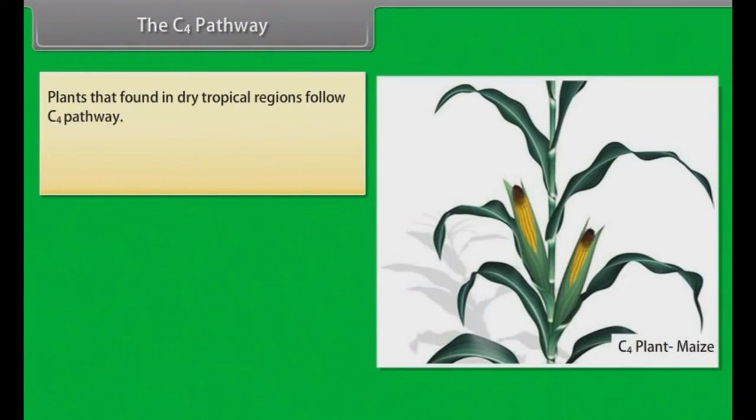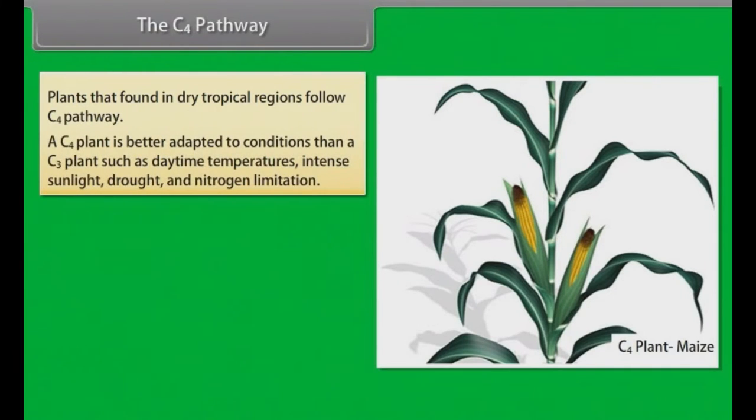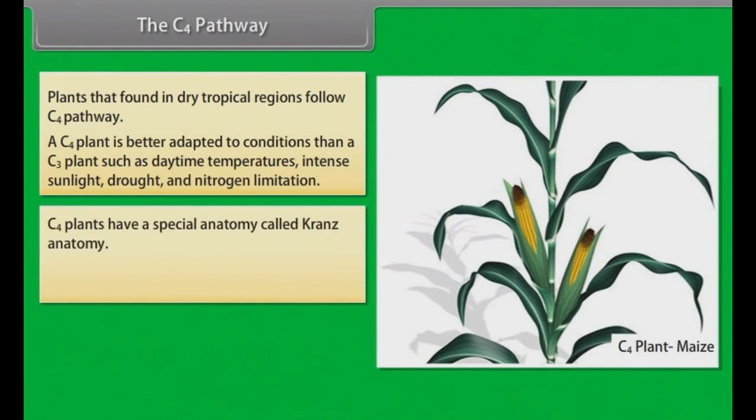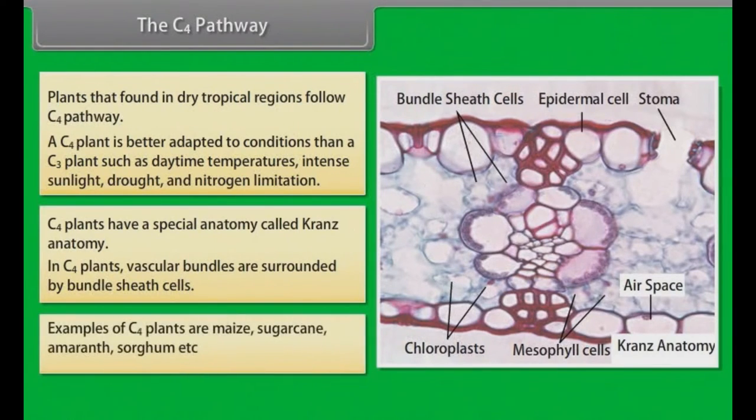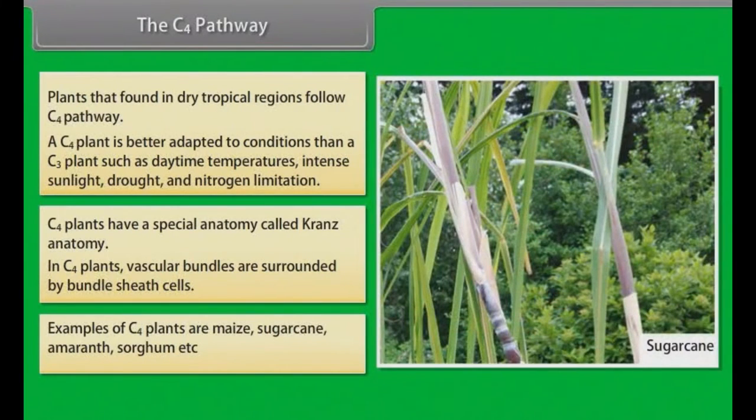The C4 pathway: Plants that are found in dry tropical regions follow C4 pathway. A C4 plant is better adapted to conditions than a C3 plant such as daytime temperatures, intense sunlight, drought, and nitrogen limitation. C4 plants have a special anatomy called Kranz anatomy. In C4 plants, vascular bundles are surrounded by bundle sheath cells. Examples of C4 plants are maize, sugarcane, amaranth, sorghum, etc.